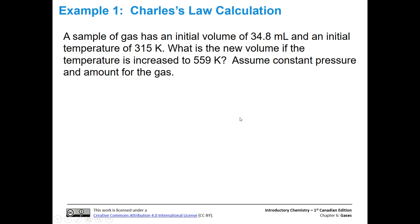Let's do a problem with Charles's Law, and do a little bit of practice and discussion of how to solve these problems. We're going to have a sample of gas with an initial volume of 34.8 milliliters and an initial temperature of 315 Kelvin. Notice we're already in Kelvin, so we're in good shape there. That will not always be the case. Sometimes, a lot of the times, you're going to see Celsius units in a problem for various gas laws. What is the new volume if the temperature is increased to 559 Kelvin? We're going to assume constant pressure and amount for the gas.